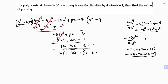Since the polynomial is exactly divisible, the remainder must be 0. So the coefficient of x must be 0: p minus 36 equals 0, giving p equals 36. The constant term must also be 0: 9 minus q equals 0, giving q equals 9. Therefore, p equals 36 and q equals 9, and the polynomial is exactly divisible by 4x² minus 4x plus 1.